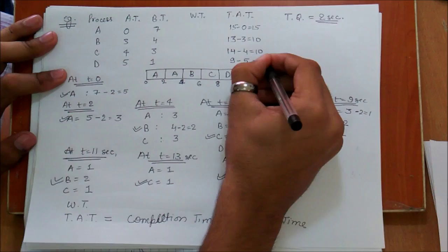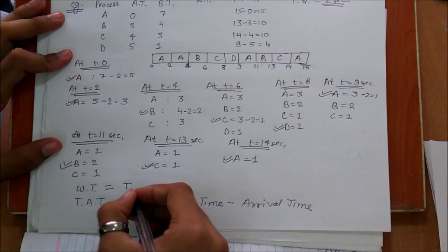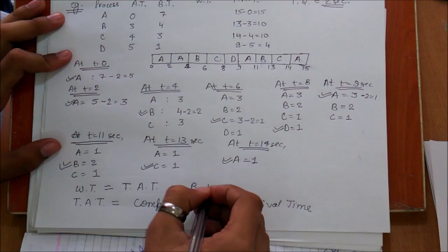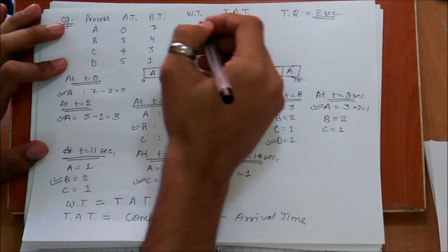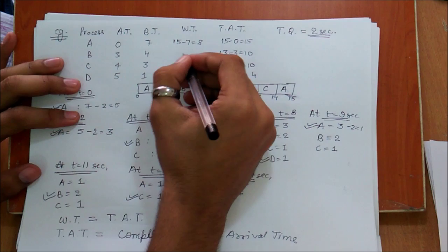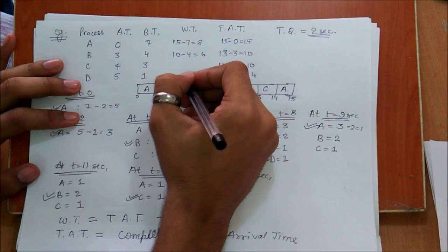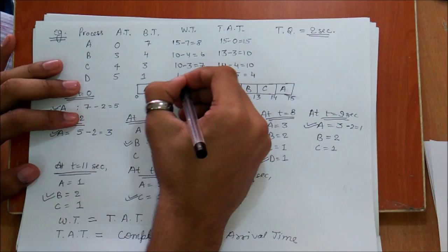Now we calculate the waiting time, which is obtained by subtracting the burst time from the turnaround time. For process A, turnaround time is 15 and burst time is 7, so waiting time = 8. For process B, it is 10−4 = 6. For process C, it is 10−3 = 7. For process D, it is 4−1 = 3.